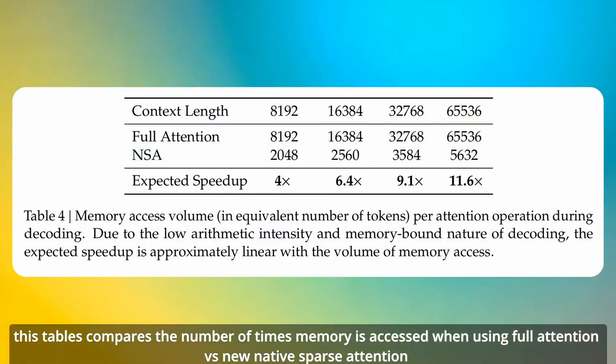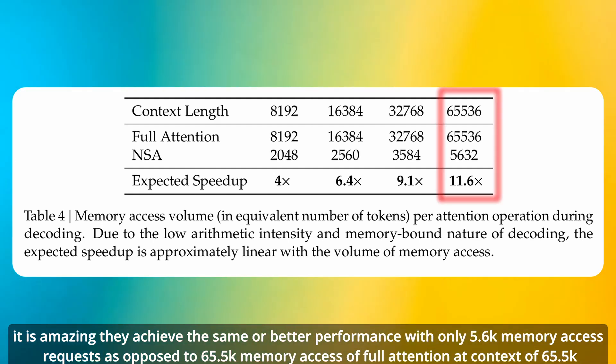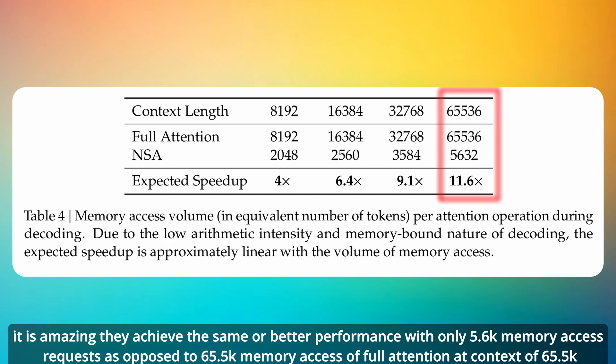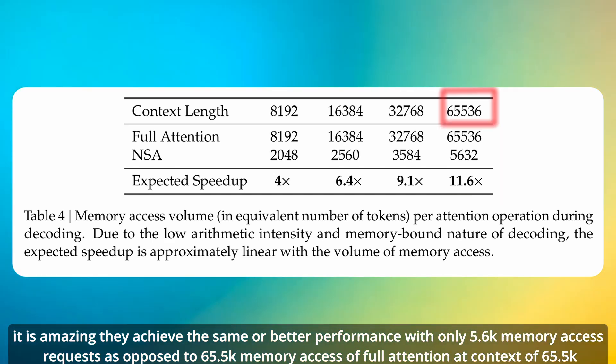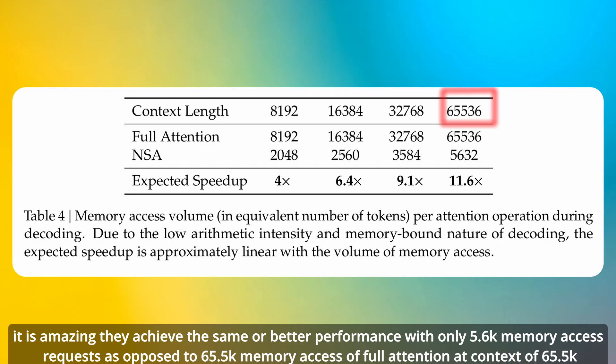This table compares the number of times memory is accessed when using full attention versus new native sparse attention. It is amazing they achieve the same or better performance with only 5.6k memory access requests as opposed to 65.5k memory accesses for full attention at context of 65.5k.